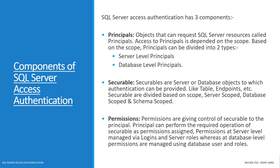Components of SQL Server Access Authentication. SQL Server Access Authentication has three components: Principals, Securables, and Permissions. Objects that can request SQL Server resources are called Principals. Access to Principals is dependent on scope, so based on scope, Principals can be divided into two types: server-level Principals and database-level Principals.